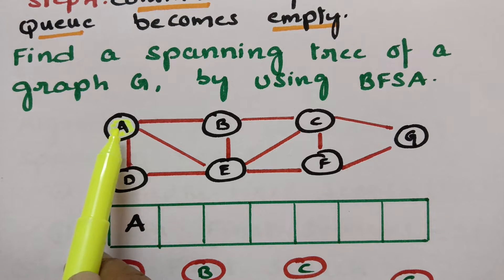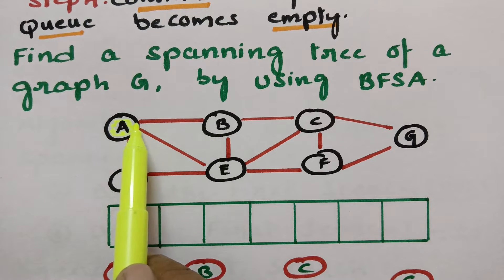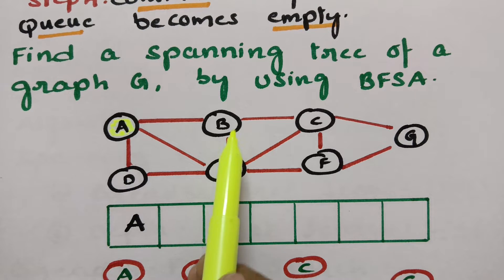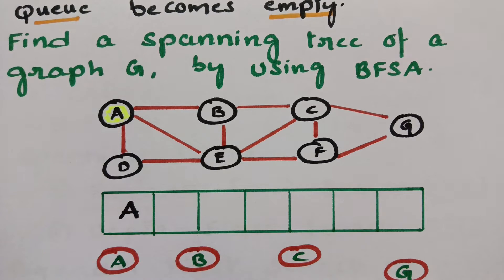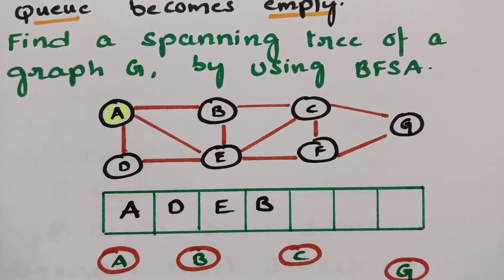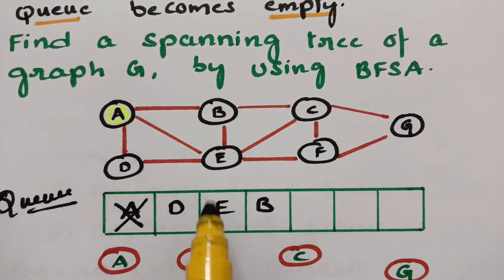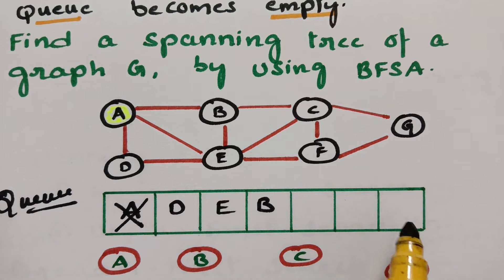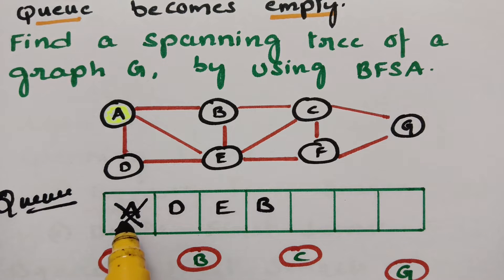I have visited A. After visiting, I have to explore — that means search the neighboring vertices. How many neighboring vertices are there? D, E, and B. So we post them. I visited A and explored, giving us D, E, and B in the queue. Next, we delete A from the queue. The queue follows first in, first out — this is first entered, first out. The next vertex in the queue is D.